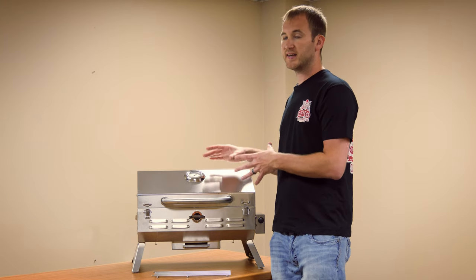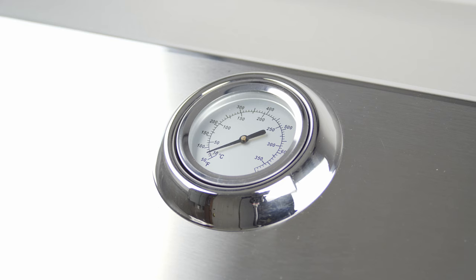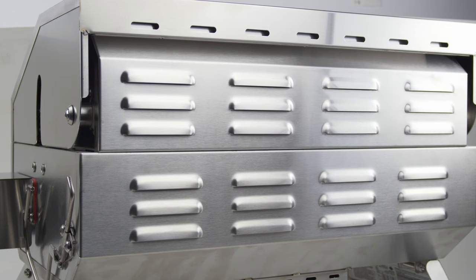On the lid of the grill, you're going to see a nice large thermometer. This thermometer goes anywhere from 50 degrees to 700 degrees to give you a nice accurate reading of the internal temperature. On the back of the grill, you're going to see a nice venting system. This helps create that even cooking temperature that I was talking about earlier.